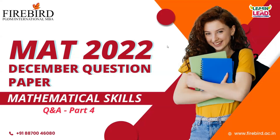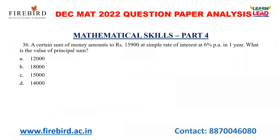Now we will see the first question. A certain sum of money amounts to 15,900 at simple rate of interest at 6% per annum in one year. What is the value of the principal sum? The amount is nothing but the final amount we get after the duration — principal plus simple interest.